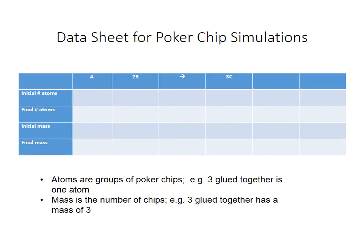This is what the day sheet looks like for your poker chip simulations. Up here you record the initial numbers of atoms — remember you're counting clumps of poker chips, not individual chips. If three are glued together, that's one atom, but the mass counts as three. You can put in whatever reaction you want and experiment. The next slide gives another simulation — I'll show you how to do a 3-to-2 ratio and what happens when it works out perfectly.